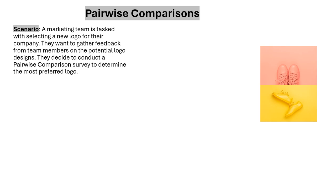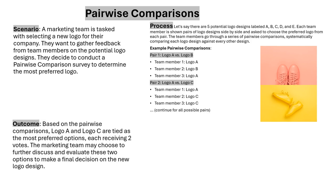Let us look at another example: pairwise comparison. In this scenario, a marketing team is tasked with selecting a new logo for their company. They want to gather feedback from team members on the potential logo designs and decide to conduct a pairwise comparison survey. There are five potential logos labeled A, B, C, D, and E. Each team member is shown a pair of logo designs side by side and asked to select their preferred logo from each pair.